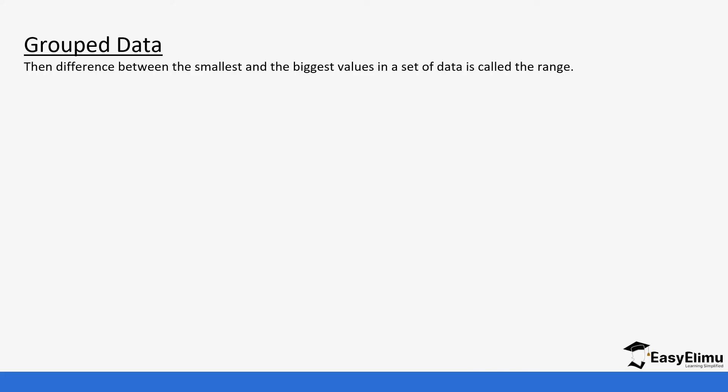For grouped data, the first thing we need to be able to get is how many classes we are going to be having. If you have classes between 6 and 12 classes, that is acceptable. We don't want less or more than that because if you have more, it's going to have a lot of data. If you have less, it's not going to give us enough information.